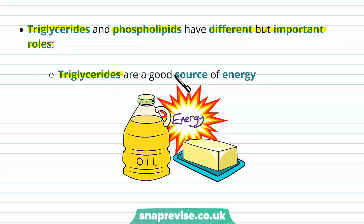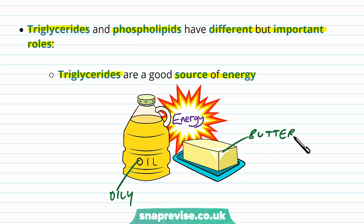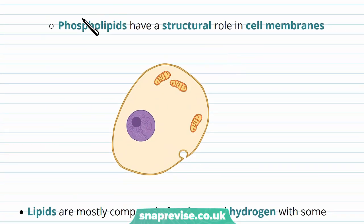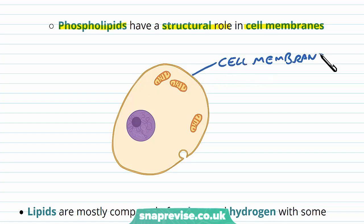Triglycerides are more used as a source of energy. We can find them in a variety of foods that we eat, for example oily foods, butter, certain fats, and oils found in various plants. Phospholipids, on the other hand, aren't used for energy so much — they're used more for a structural role in building up the cell membranes. The membranes that surround the cell act as a barrier to the outside world, and the main component making up this layer is a phospholipid.